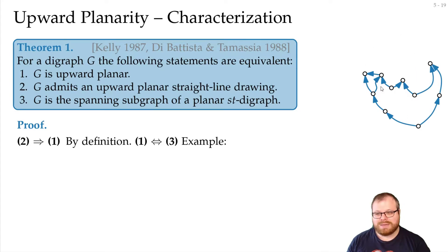So we look at this example again that we had before. This is clearly an upward planar graph because this is an upward planar drawing. And now we want to prove that it is a spanning subgraph of a planar ST-digraph. For that, we first look at all the sinks. We choose any of those, and choose that one as our supersink T. And then we add directed edges from these vertices to T.